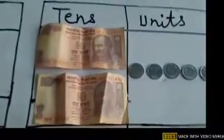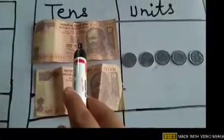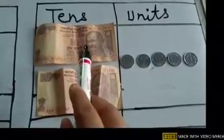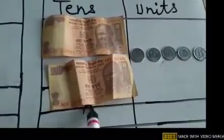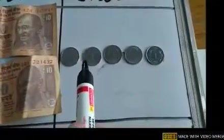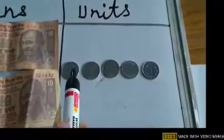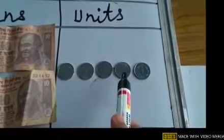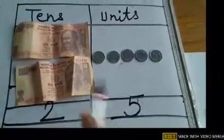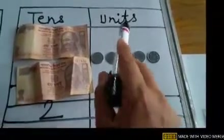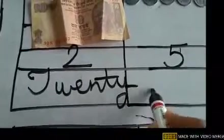Now the second example. Can you see the 10-rupee notes? How many notes? 1 and 2 — so we can see 2 notes of 10 rupees, that means 2 tens. Then how many single 1-rupee coins? Count with me: 1, 2, 3, 4, and 5 — so 5 coins of 1 rupee, meaning 5 units. The total number is 25. In 25 there are 2 tens and 5 units, so we have 25 rupees.